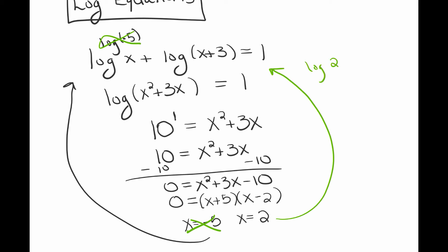Now if I plug in 2, it doesn't cause any problems. We have log of 2 and then we have log of 2+3, which will give you log of 5, and that's not going to give you an error.